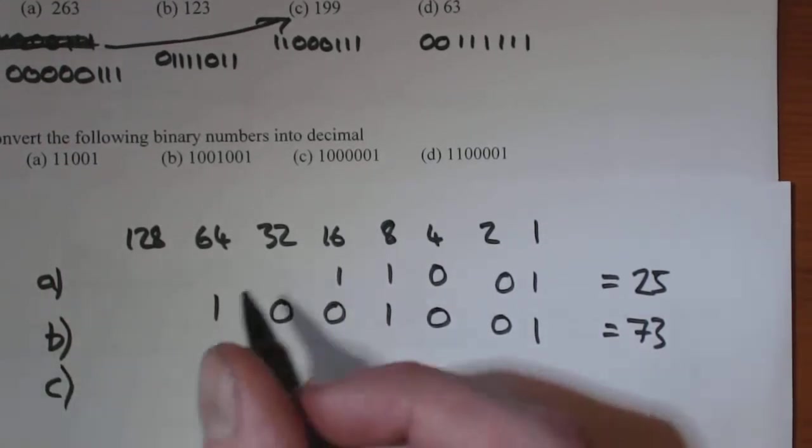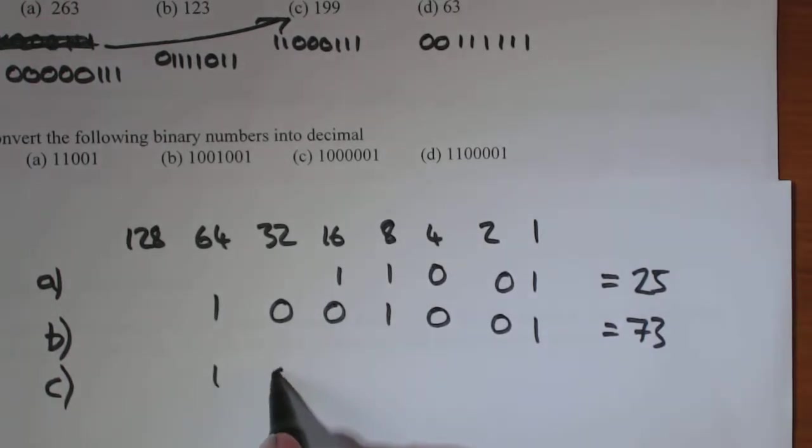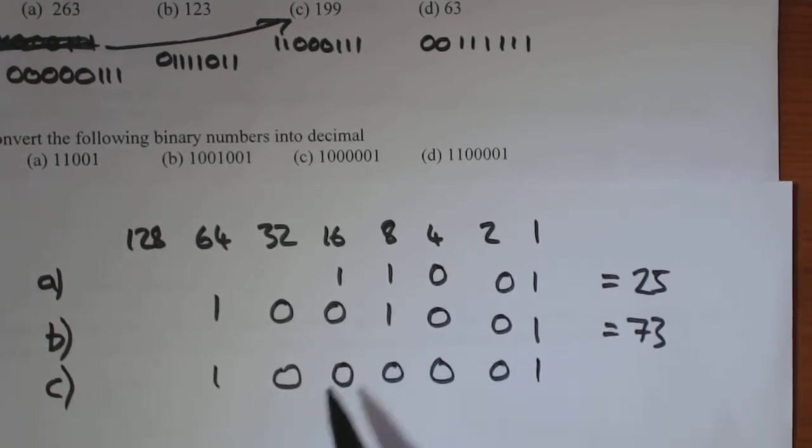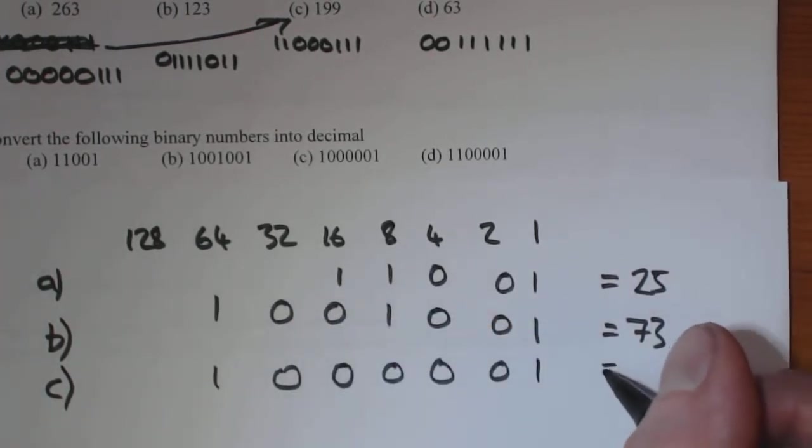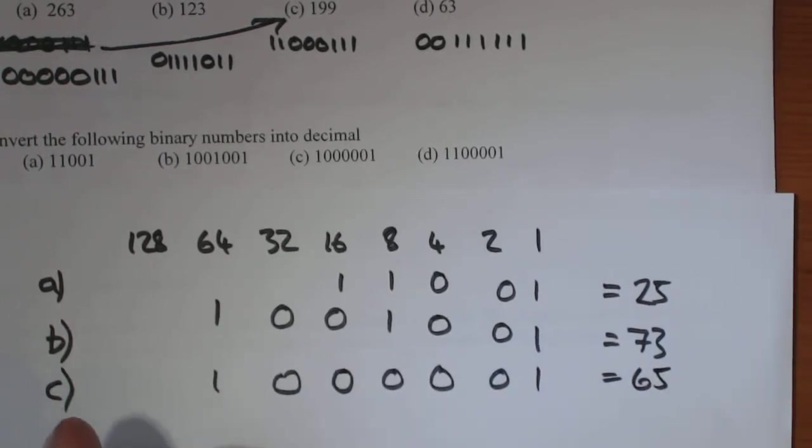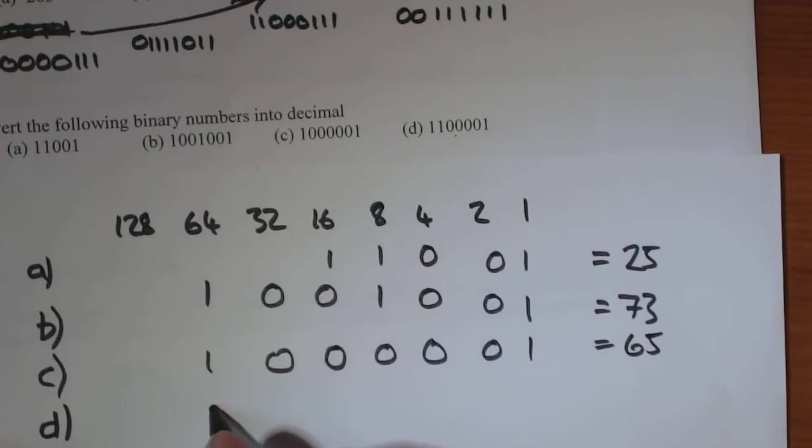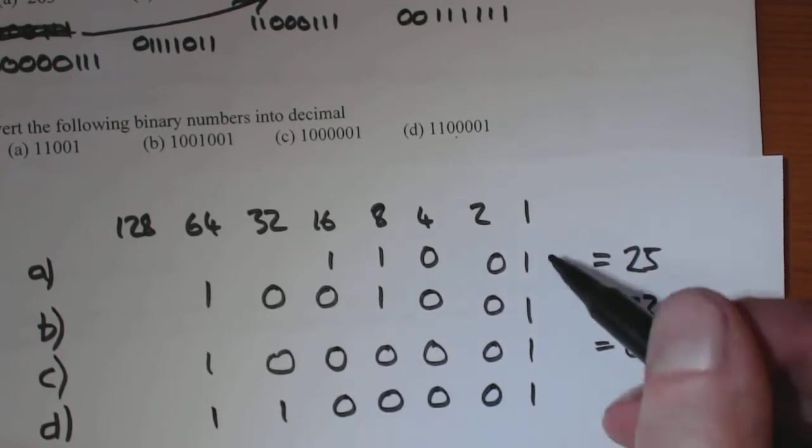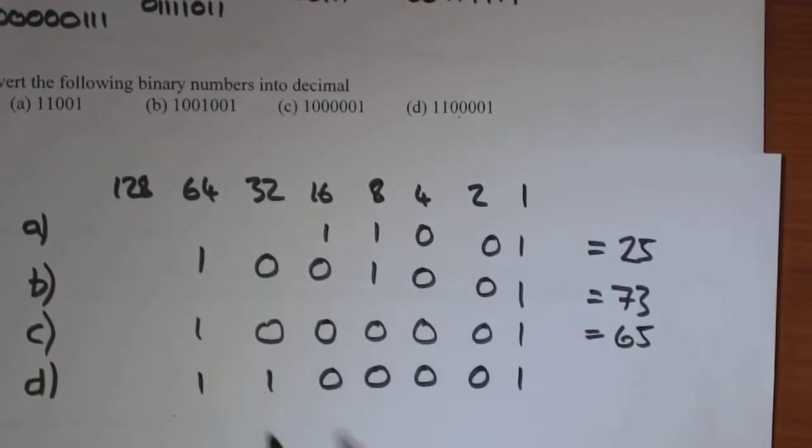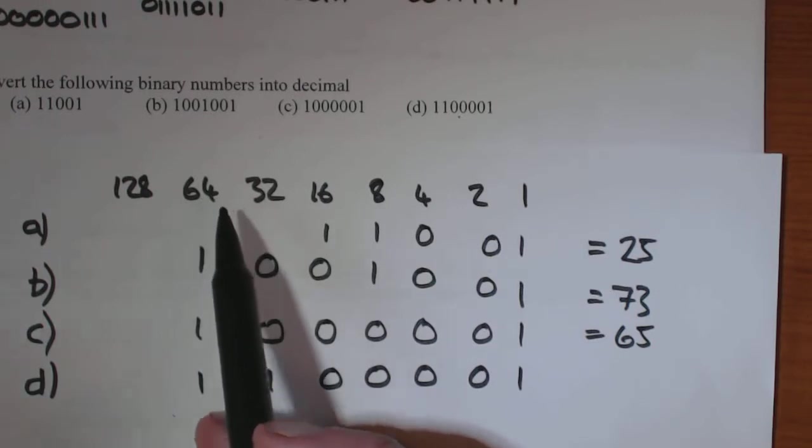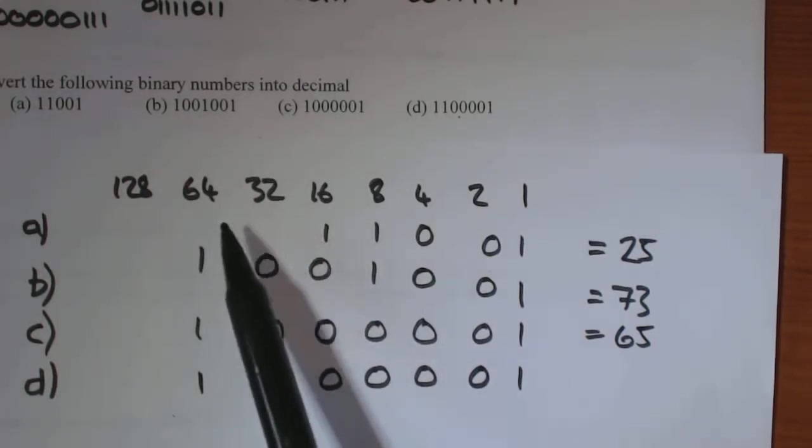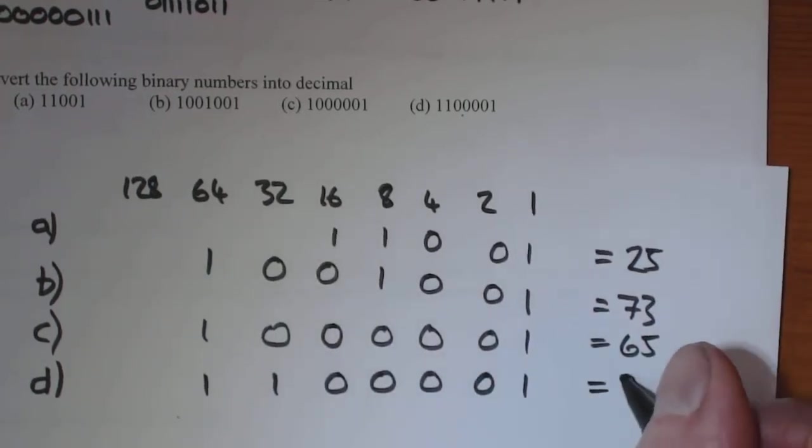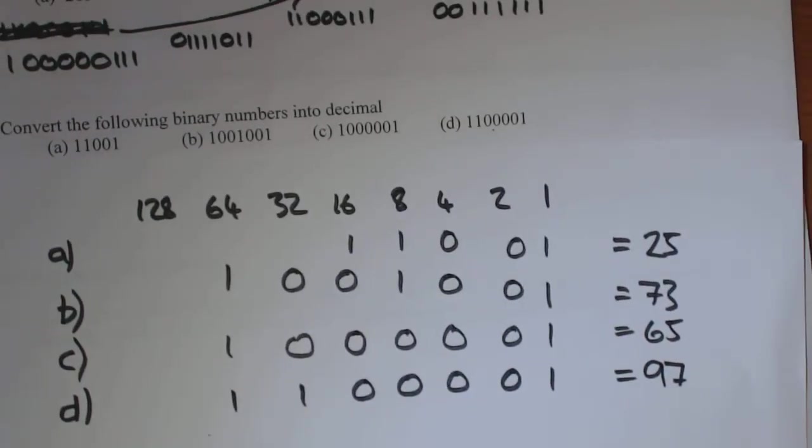So for C, we have 1000001. 64 plus 1 is 65. And then for D, again, we're just using 7 bits for each one. And they're all odd numbers because there's a 1 underneath. So 64 plus 32, that is 96 plus 1, that equals 97.